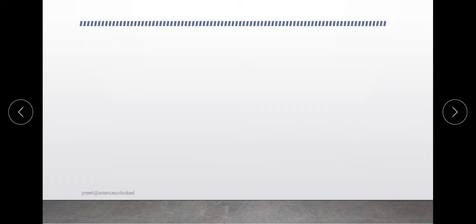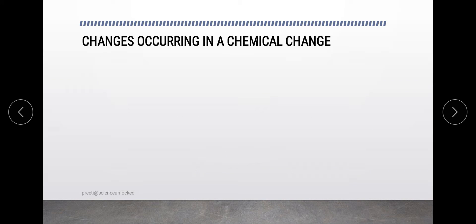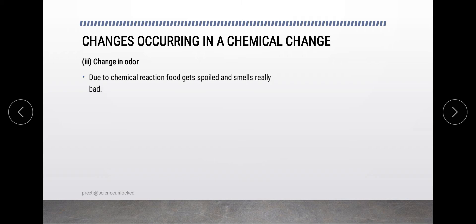The third change which will help identify a chemical change is the change in odor — that is, the smell. What happens is that every time there is any kind of change, especially with reference to food articles, we will find out that its smell will change. That is what is called the change in odor.